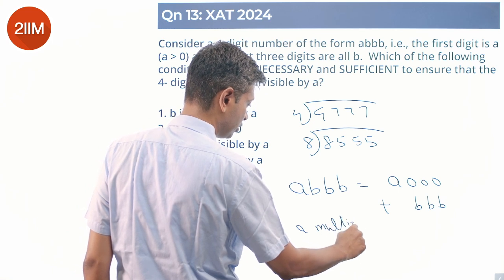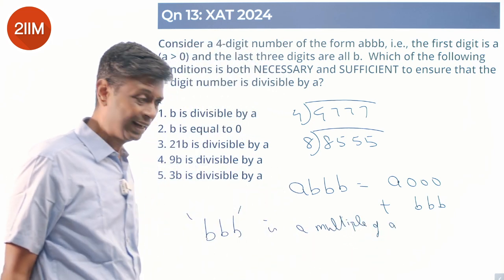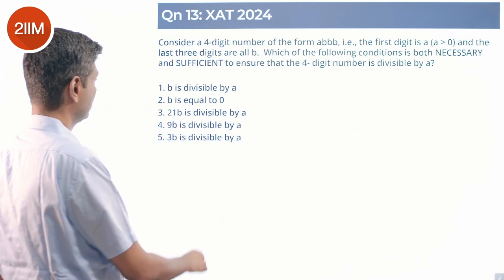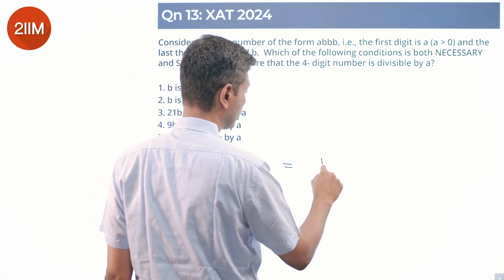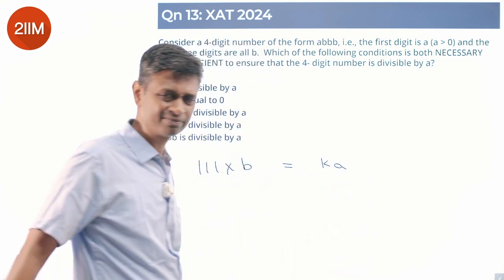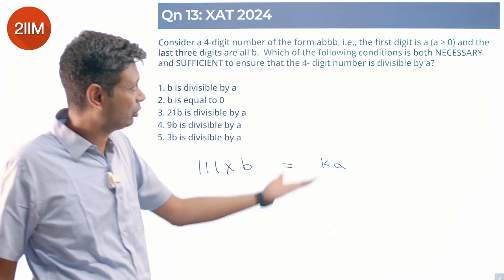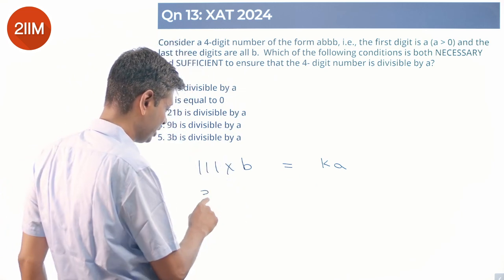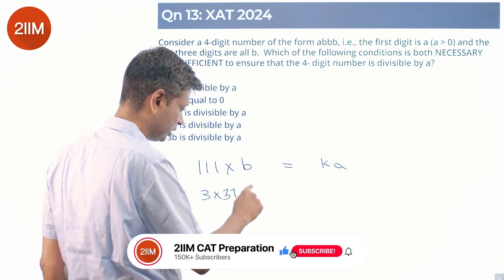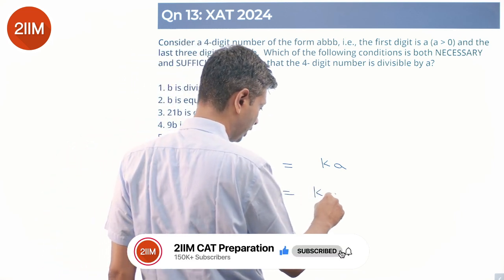What is the condition for necessary and sufficient for this to be true? Triple B as a three digit number is 111 times B equal to K times A. The multiple of A. That's what this question is saying is divisible by A. 111 is 3 into 37 into B is a multiple of A.